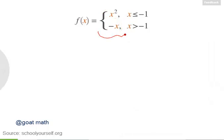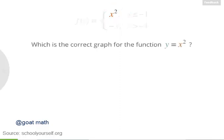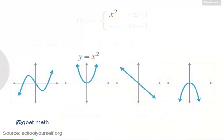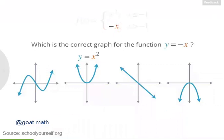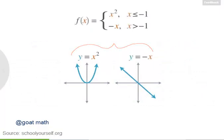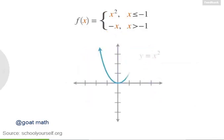Don't worry about all this notation just yet. Let's first look at x squared. Which of these is the correct graph of x squared? Now let's look at the other function, which was minus x. Which of these remaining graphs shows the function y equals minus x? So here are the two functions. Let's plot them on the same set of axes — here's y equals x squared, and here's y equals minus x.